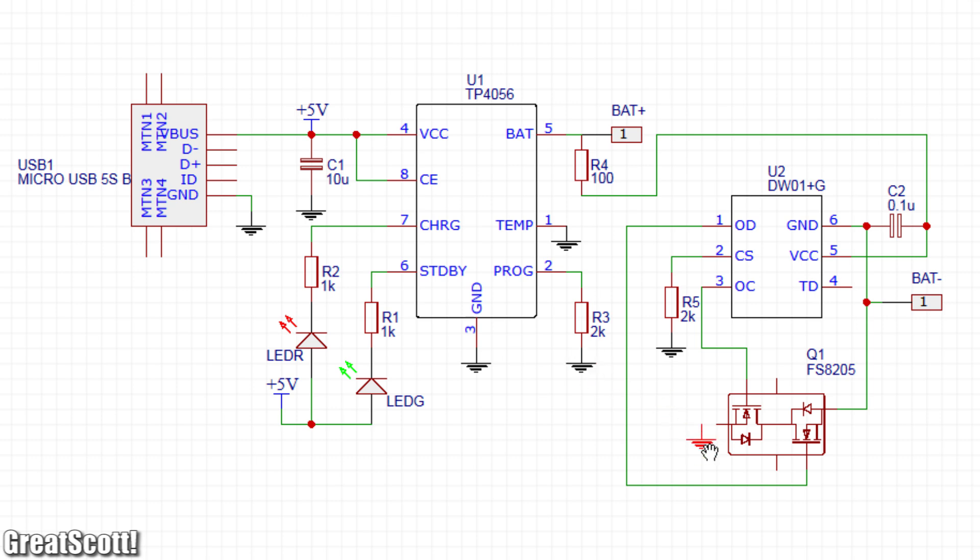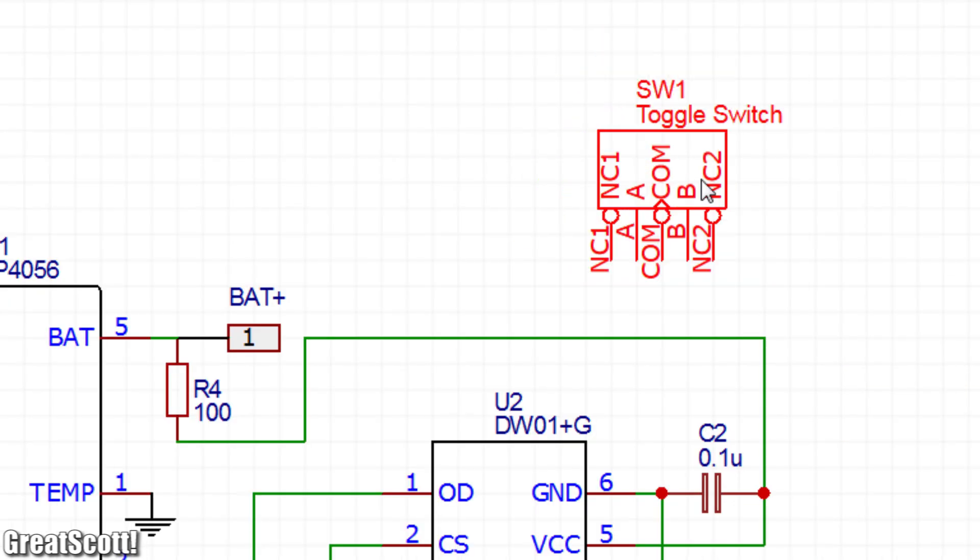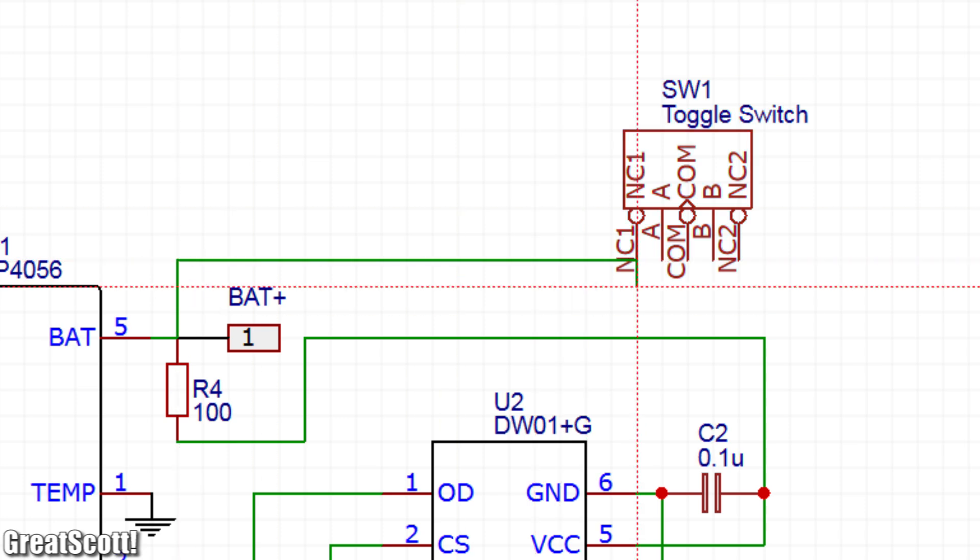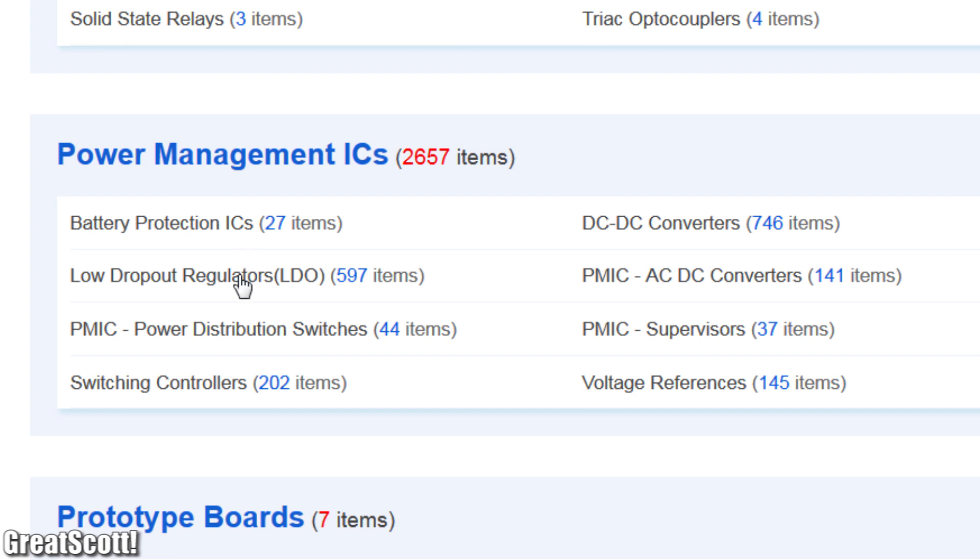Which means we were pretty much done with the charge and protect parts of the circuit. Next I added a small toggle switch to later turn on and off the 5V boost function and started searching for a suitable boost converter IC.